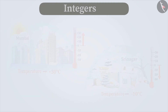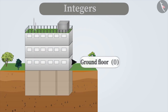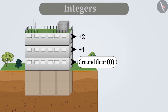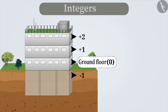Similarly, in a building, the floors above the ground are shown by a positive sign, whereas the floors below the ground, like the basement, are shown by a negative sign. Numbers which have a positive sign before them are called positive numbers, and those which have a negative sign before them are called negative numbers.